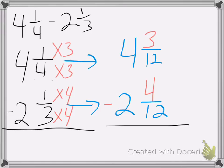Which again, I can't do. So I'm going to borrow from the 4. 4 becomes a 3. I'm going to add 12 twelfths to my fraction. Because 12 twelfths equals the 1 that I borrowed. 12 plus 3 is 15. So I'm going to erase that. Change it to a 15.